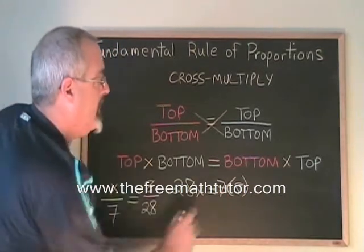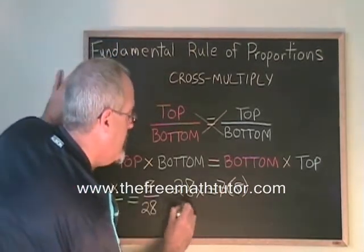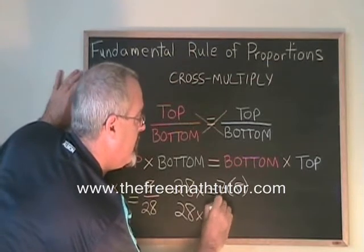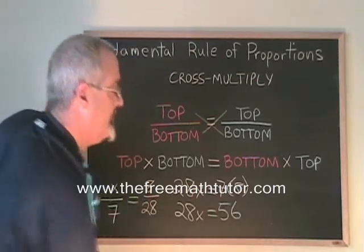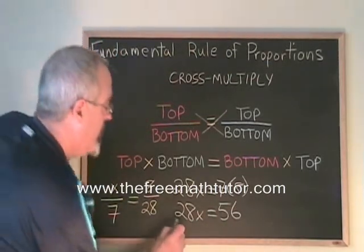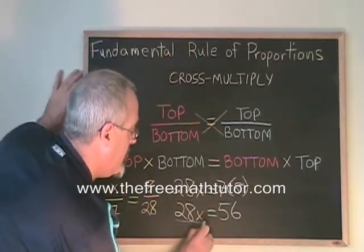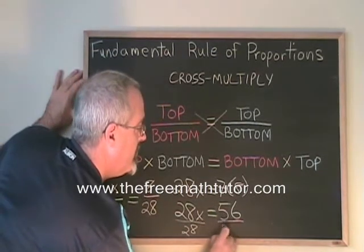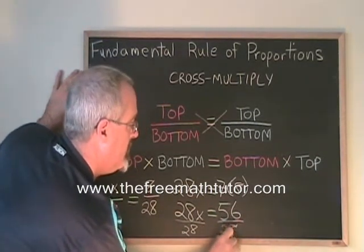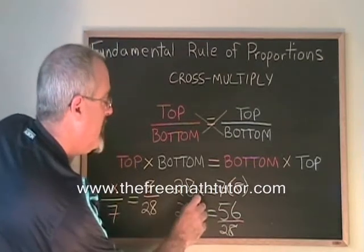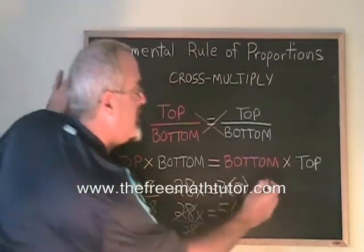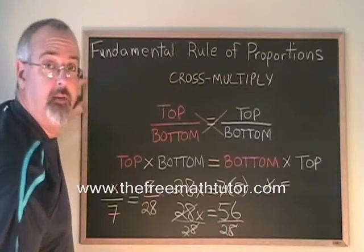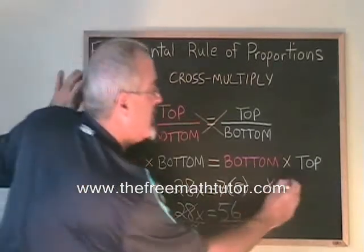Simplifying, I'll start by multiplying 7 and 8, and I get 56. Then, if I divide both sides by 28, I can cross out these. My x is isolated, and it's equal to 56 divided by 28, which is 2.